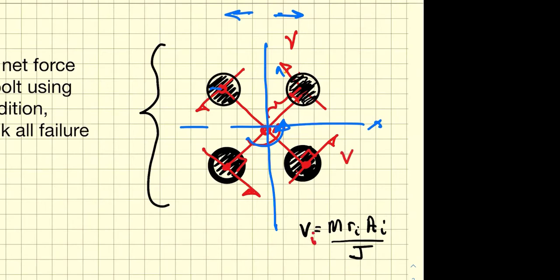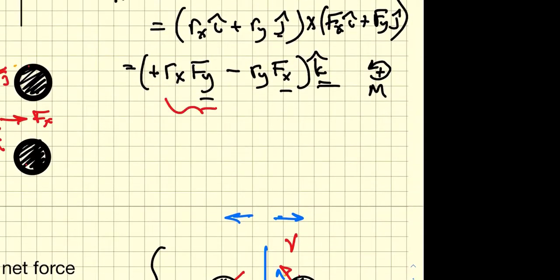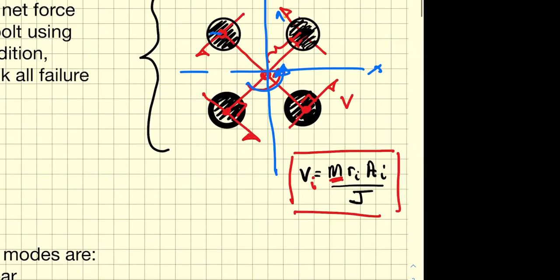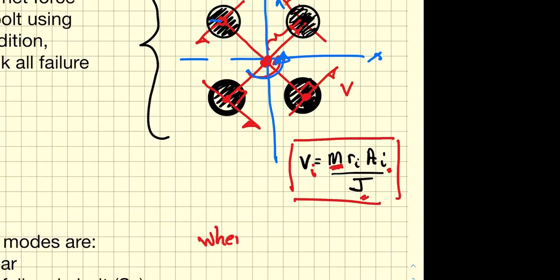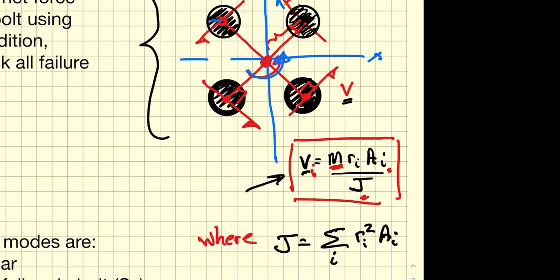The shear force VI at bolt i is equal to the magnitude of the moment times Ri — the distance from the centroid to bolt i — multiplied by the cross-sectional area of the bolt, divided by the polar moment of inertia J. The polar moment of inertia J is just the sum over all bolts of the second moment of the bolt areas. This is a very general formula: the R's and areas can all be different.